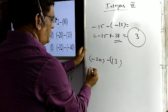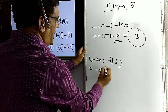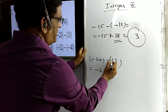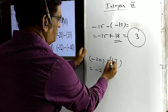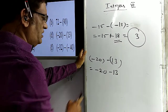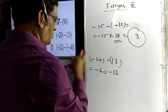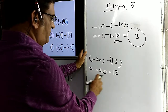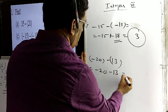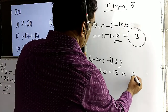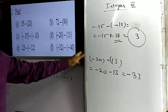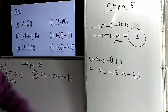The fourth problem is minus 20 minus of 13. There is a minus sign outside the bracket and a plus sign inside, so we take the additive inverse of 13, which is minus 13. Now minus 20 and minus 13 have like signs, so we do addition: 20 plus 13 equals 33, and the sign is minus. So the answer is minus 33.